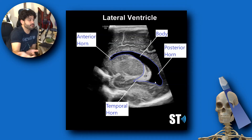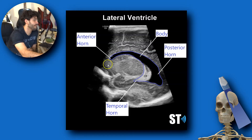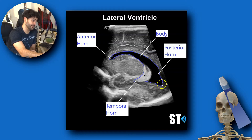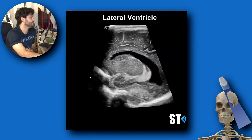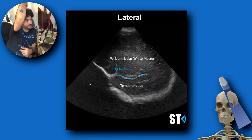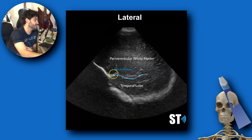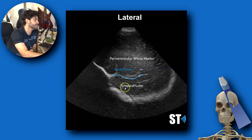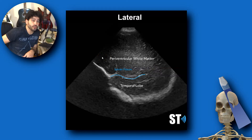An MRI may be needed to really differentiate between real choroid plexus and actual hemorrhage. Usually the hemorrhage will collect in the dependent portion — if there is intraventricular hemorrhage, you'll see it collecting there. Going all the way lateral, in an older patient you can see the sylvian fissure, the periventricular white matter — the tissue around the ventricle — and the temporal lobe. That's a good spot to look for PVLs, periventricular leukomalacia.